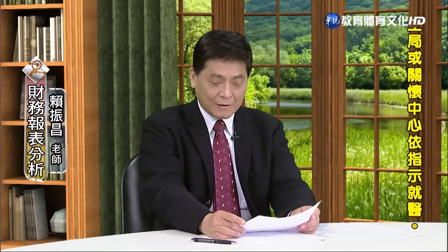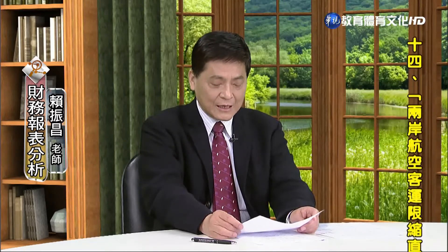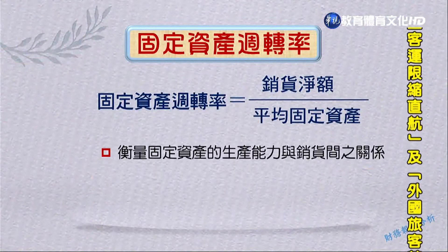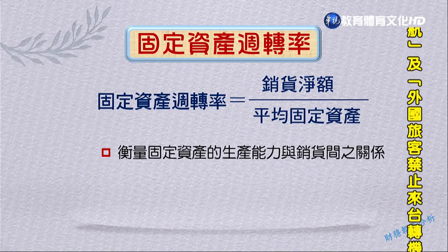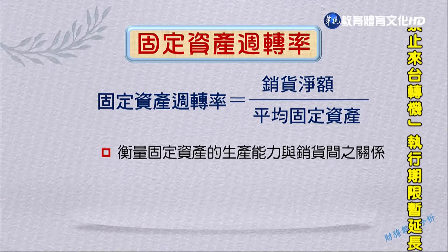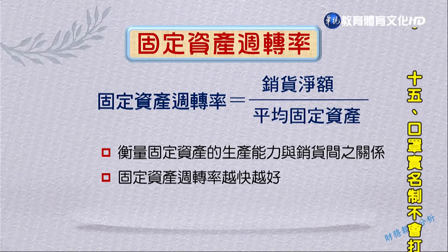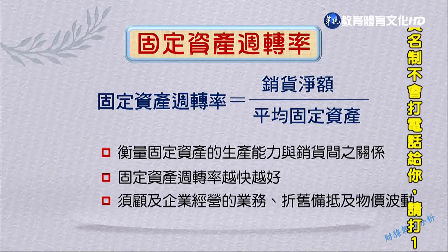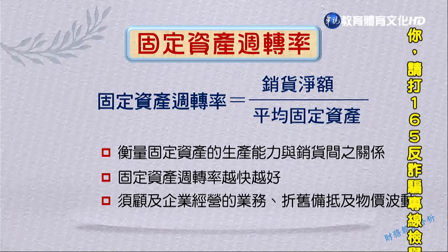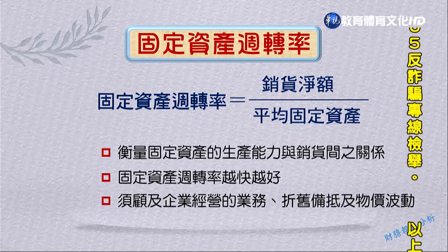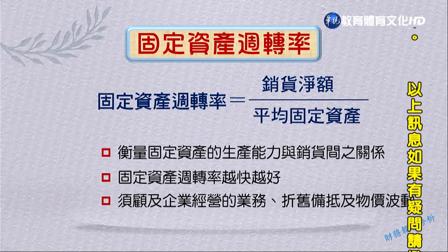固定資產周轉率的計算公式是：固定資產周轉率等於銷貨除以平均固定資產，與總資產周轉率最大不同是分母改為平均固定資產。固定資產周轉率是衡量固定資產的生產能力與銷貨之間的關係，可作為管理固定資產的參考。通常固定資產周轉率越快越好，但要注意不同企業經營業務不同，折舊和物價波動也會影響比較結果。